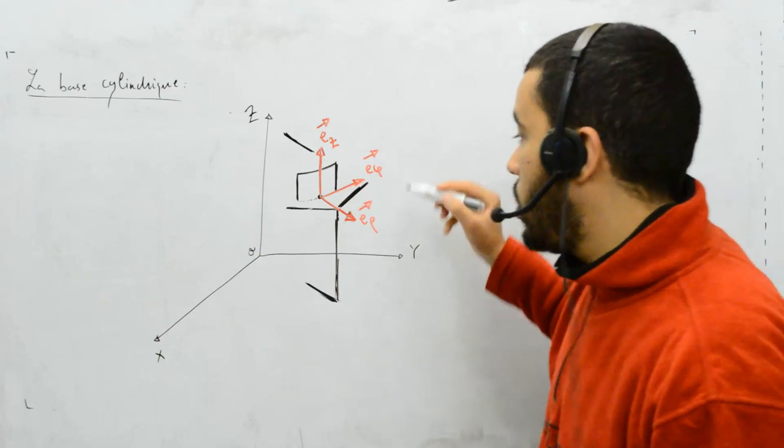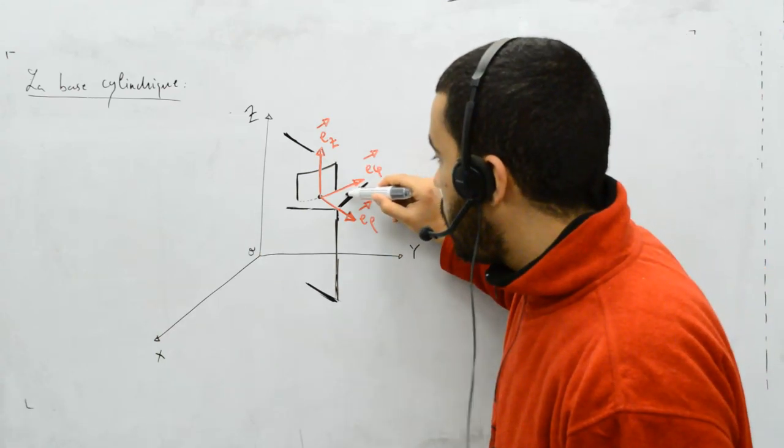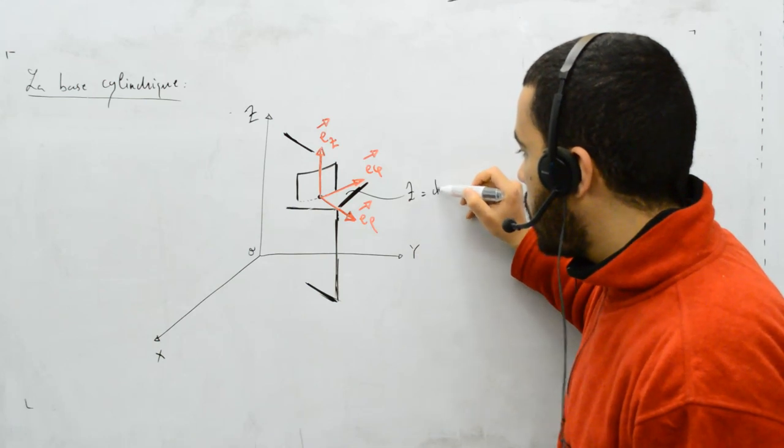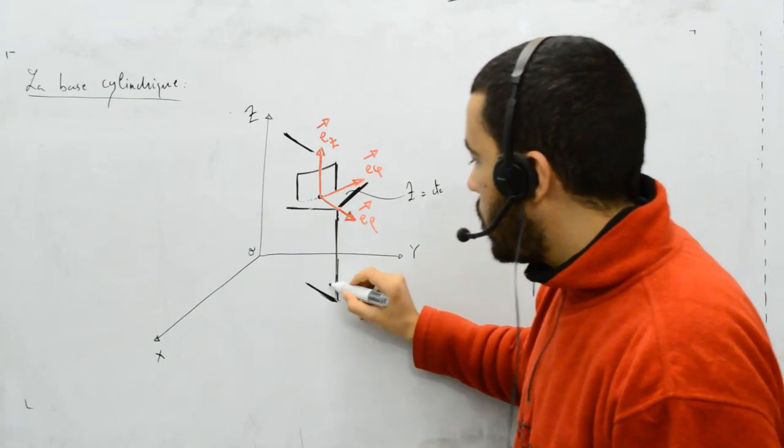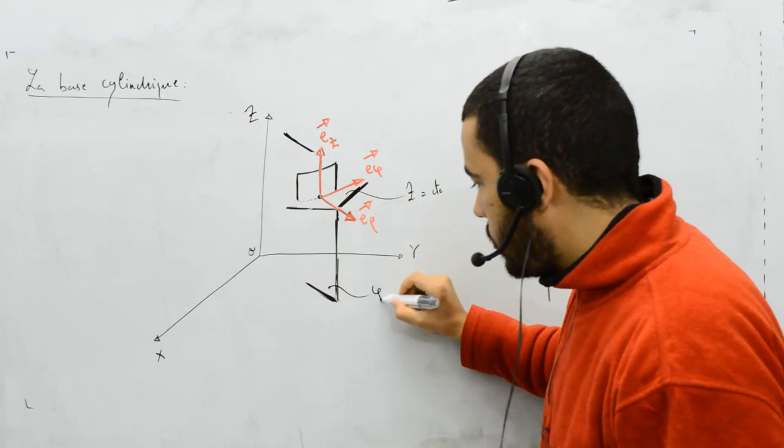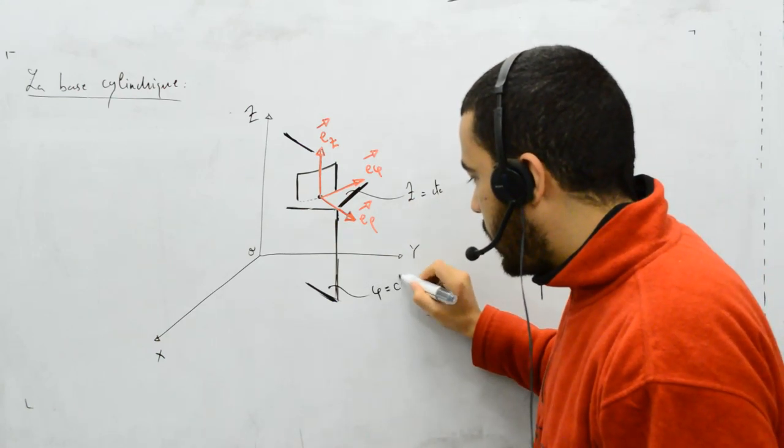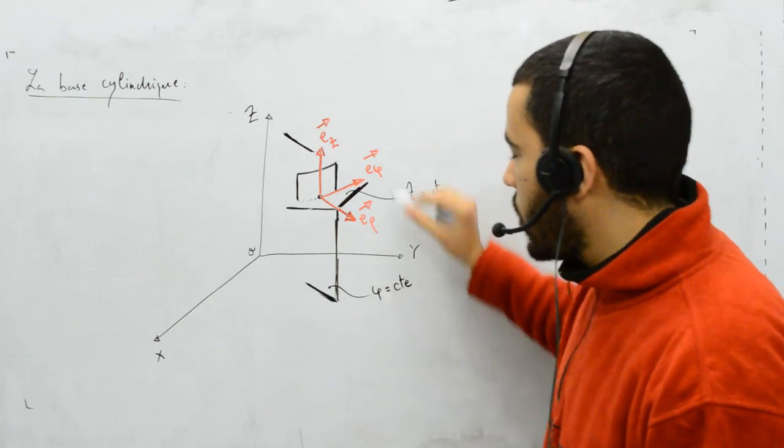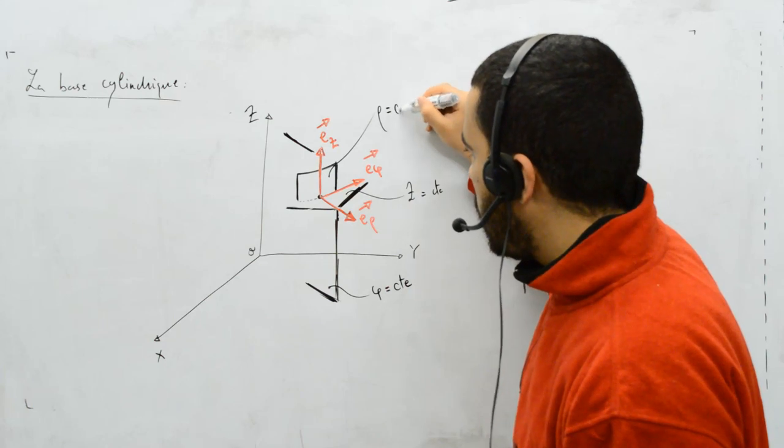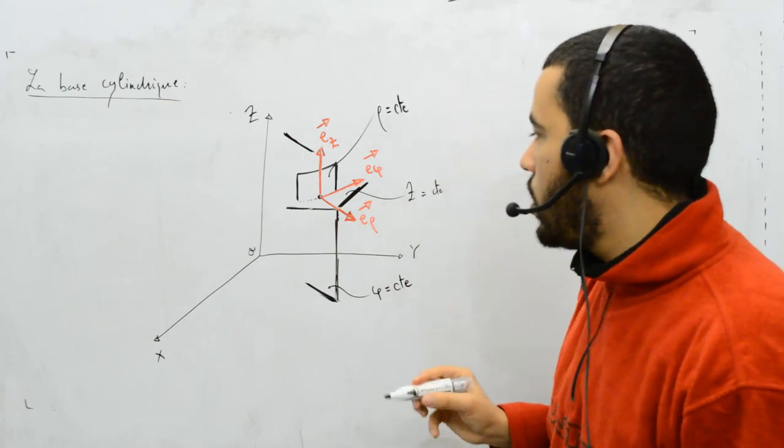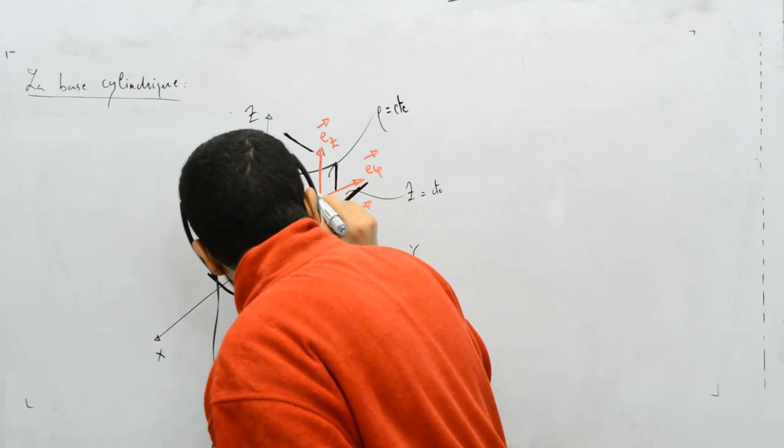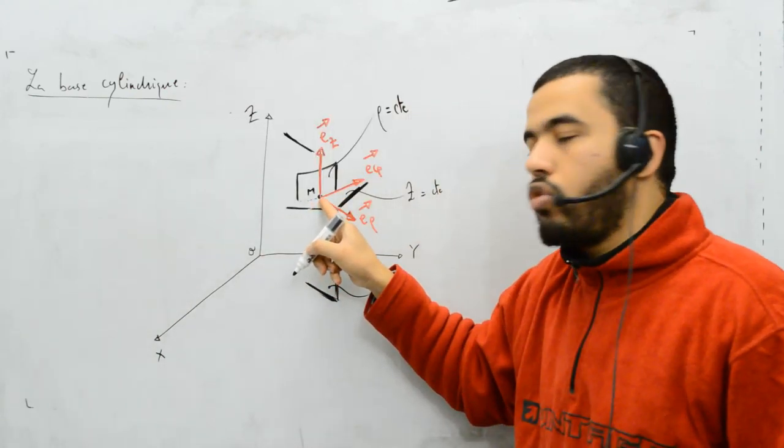Les plans que vous voyez ici : ce plan-là, c'est Z égale constante. Ce plan-là, c'est Φ égale à constante. Et ça, c'est tout simplement votre point M.